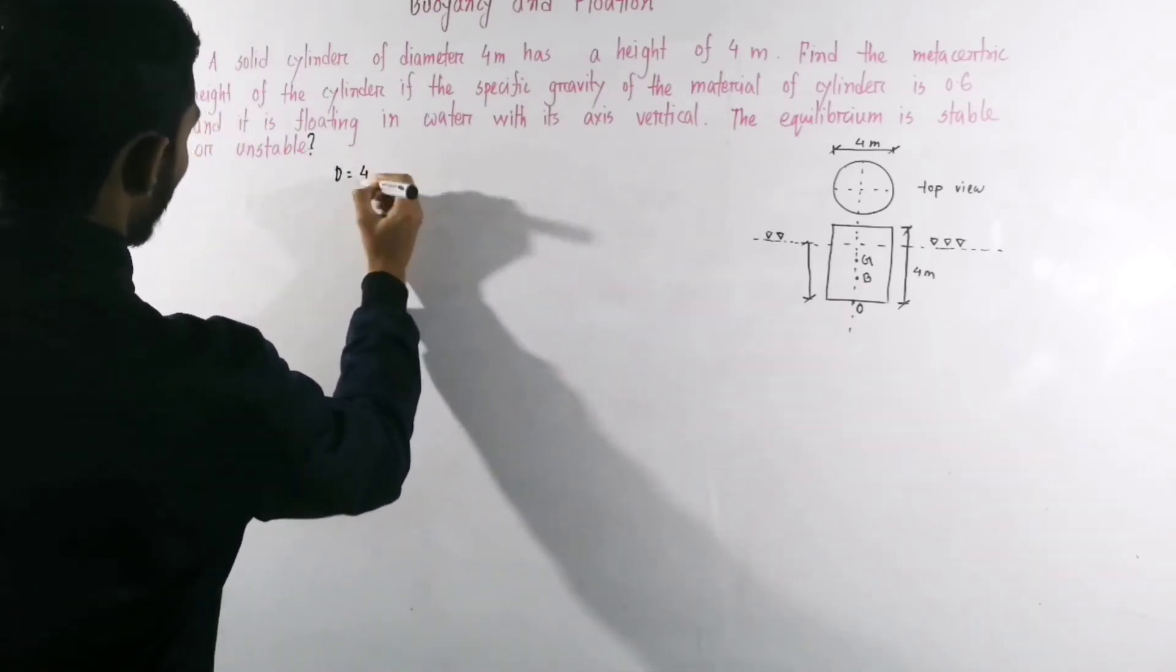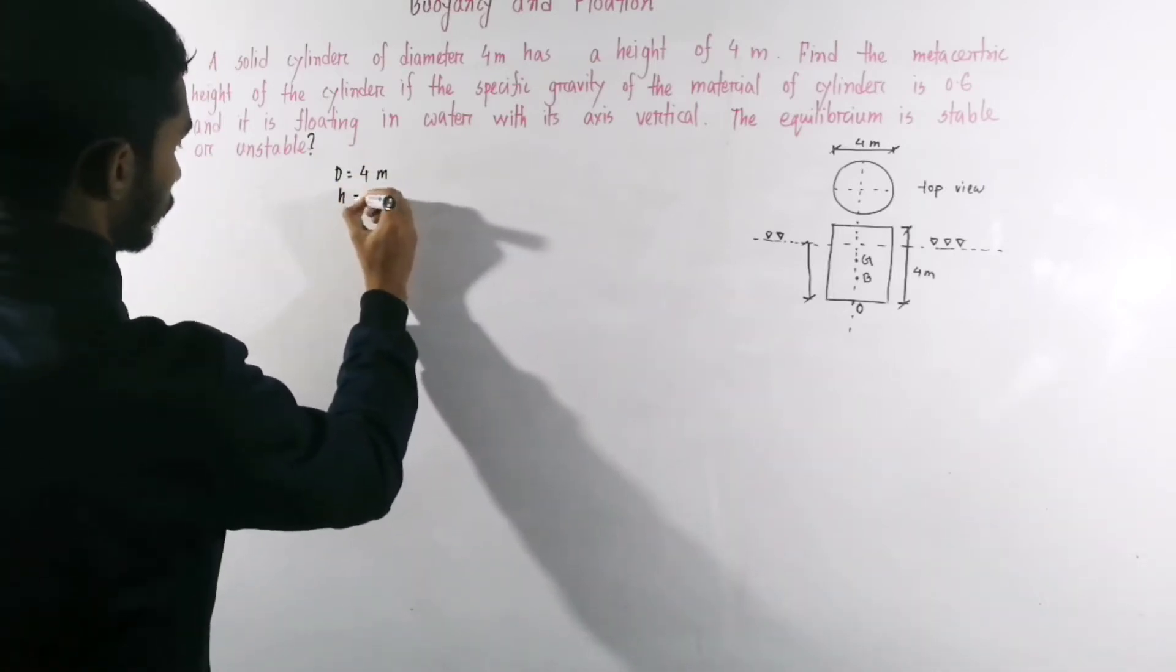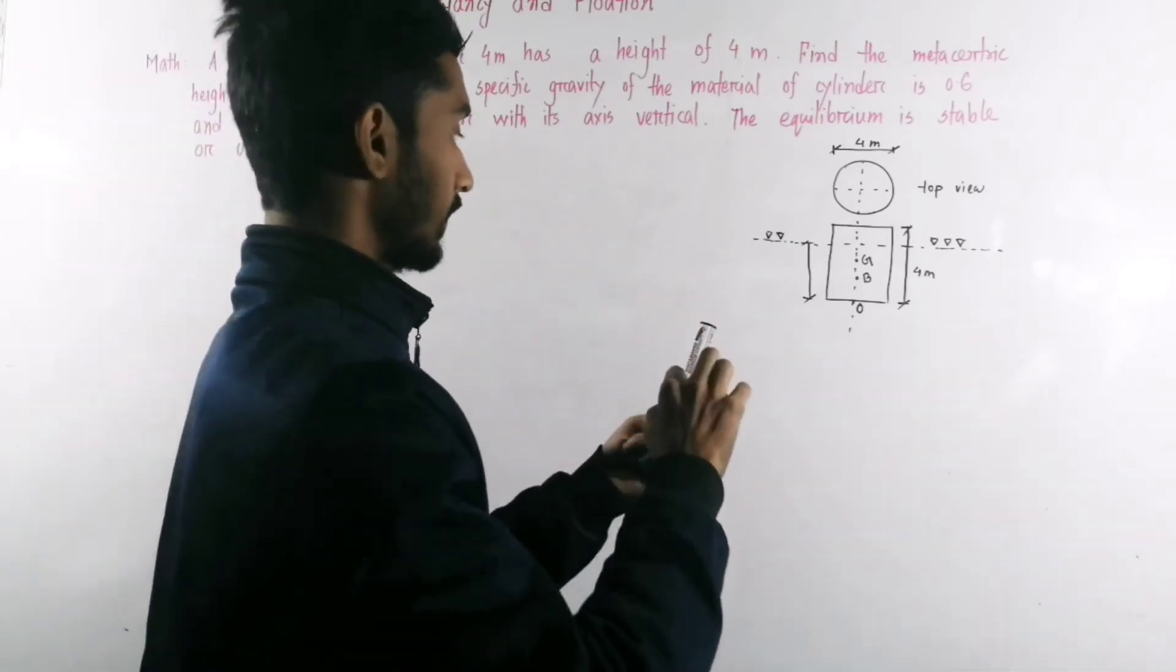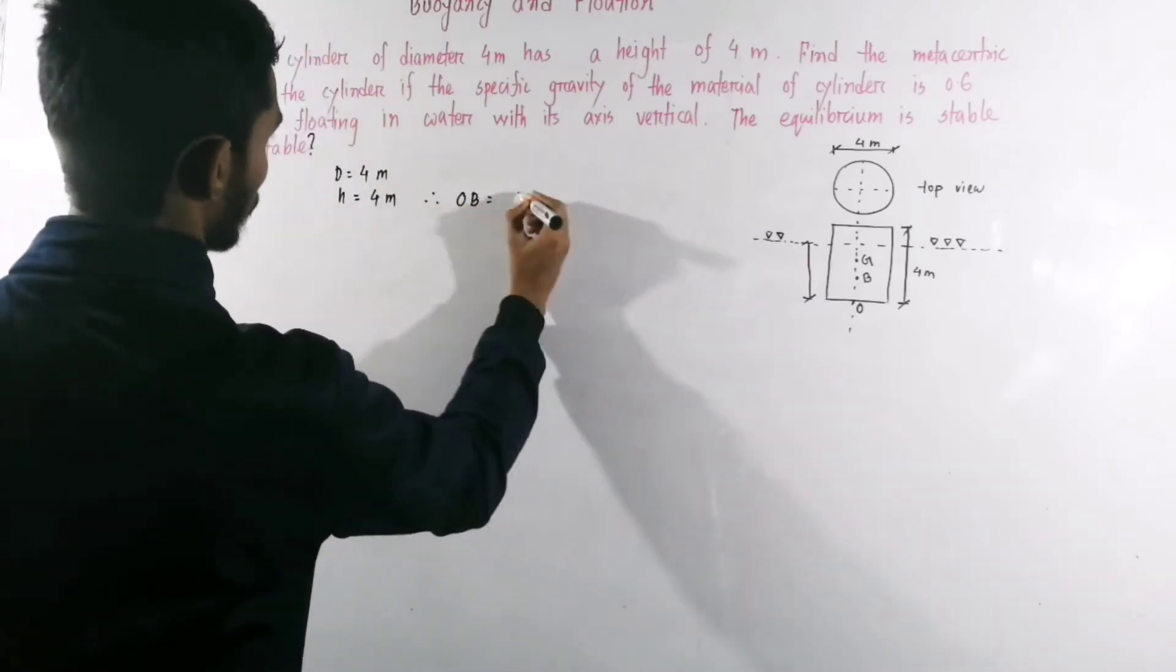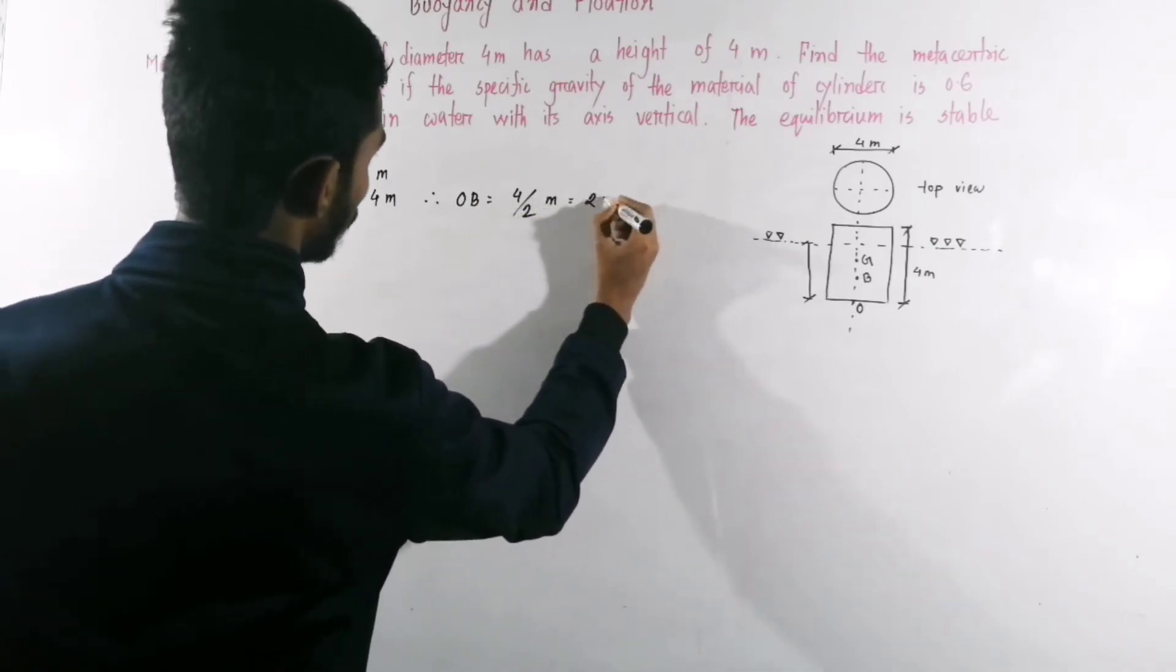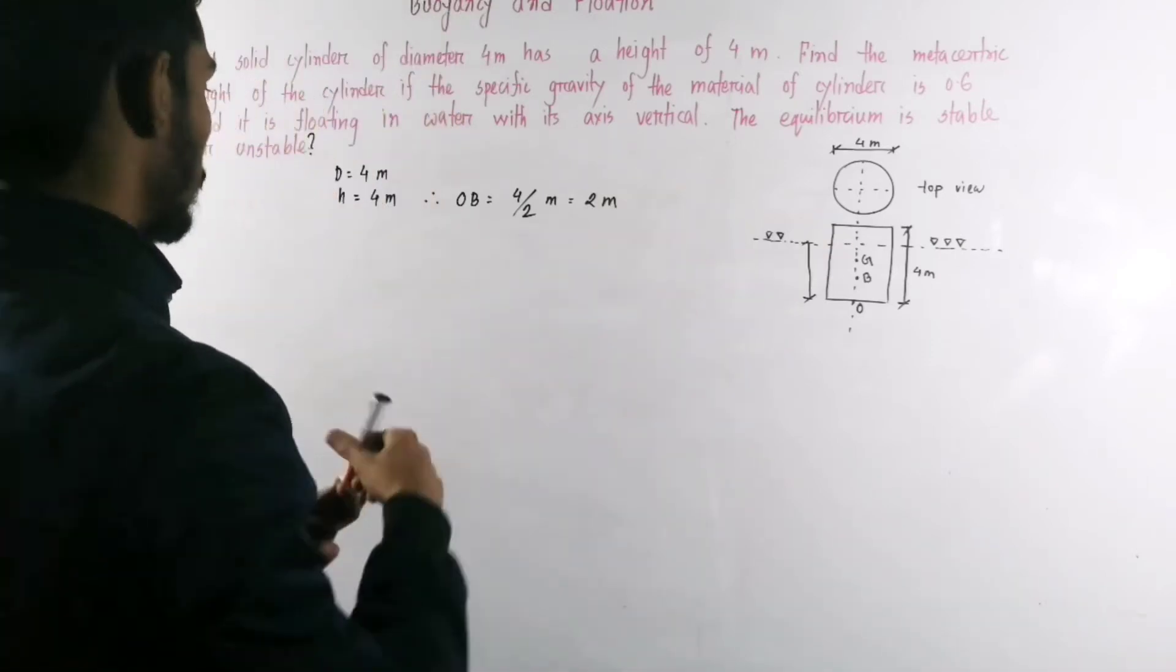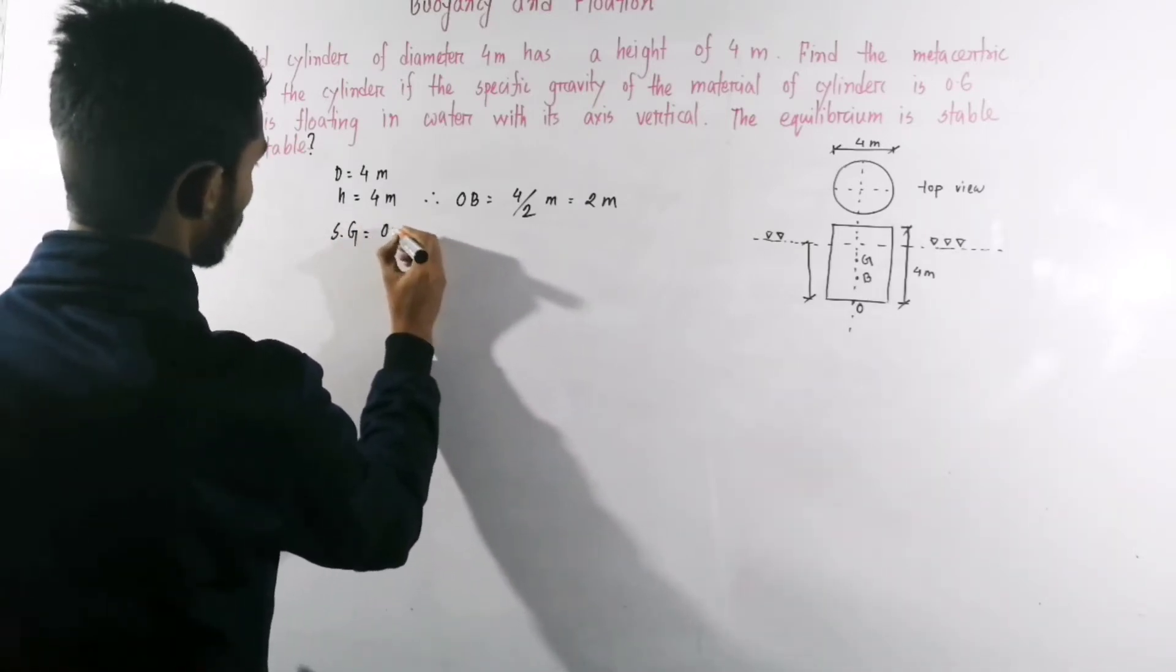D equal to 4 meter. H is equal to 4 meter. So we can see that the center of gravity OG, OB equal to H/2 meter equal to 2 meter. Specific gravity of solid body is 0.6.